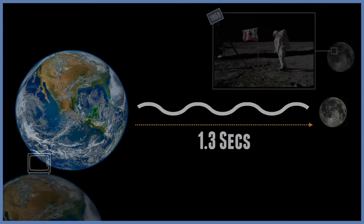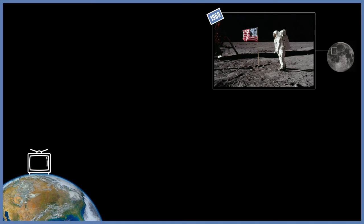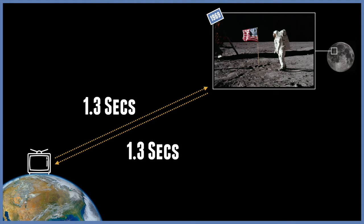When you were watching the astronauts of Apollo 11 land on the Moon live, you were actually watching them 2.6 seconds behind the live event. That's because it takes light 1.3 seconds to go from Earth to the Moon and back again.